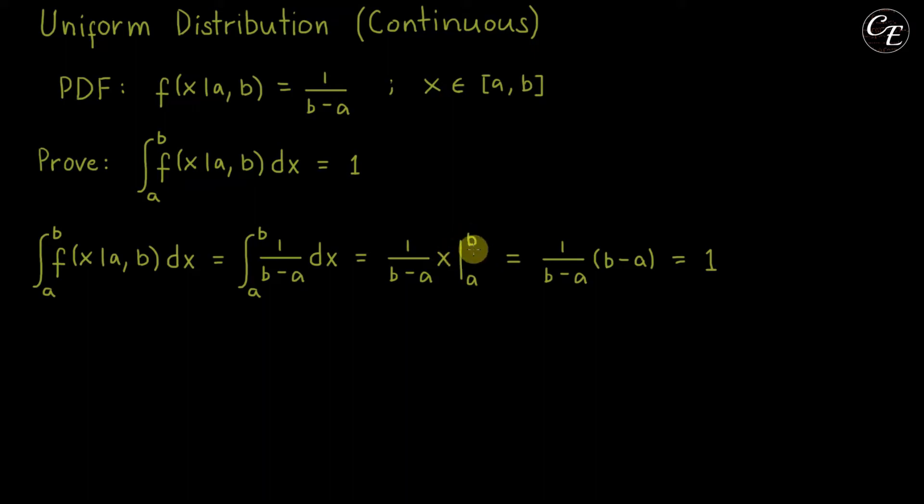Now, if we substitute this b for x, we have here b. Then minus, if we substitute this a for x, we have here a. Then we can cancel out this b minus a here, and also b minus a here. Then we're left with just one.